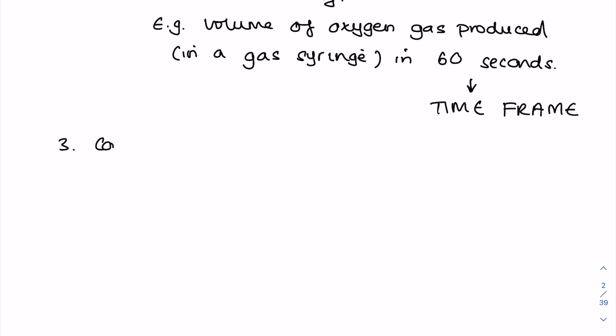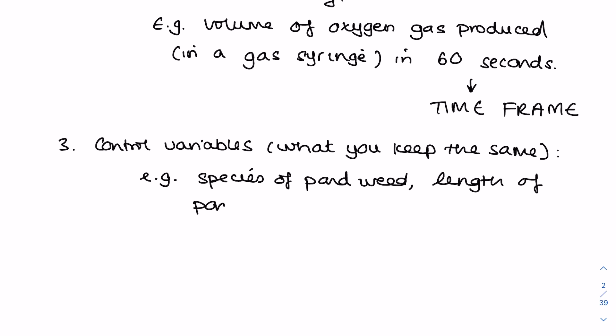The next thing you want to do is list quite a few control variables. I would say at least three. Remember these are what you keep the same. So again very dependent on the investigation. It could be species of pondweed, length of pondweed, pH, carbon dioxide concentration.